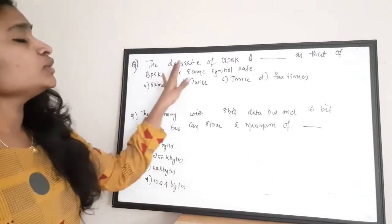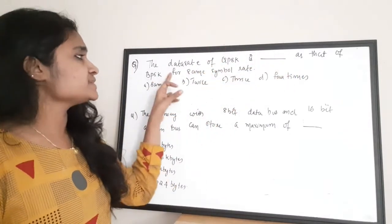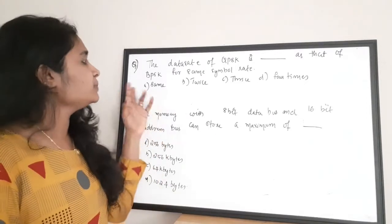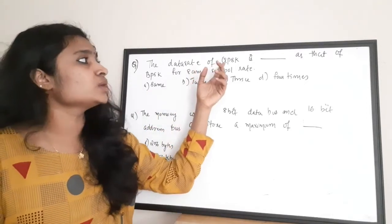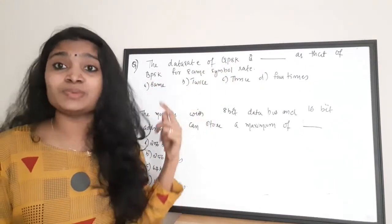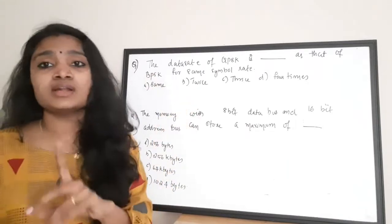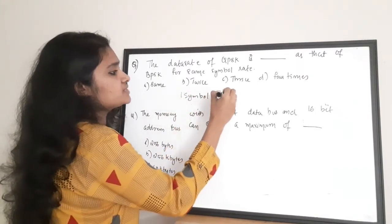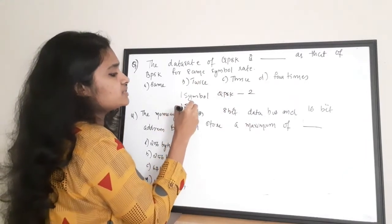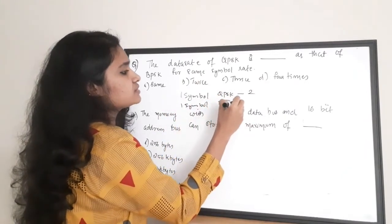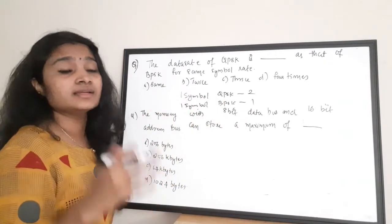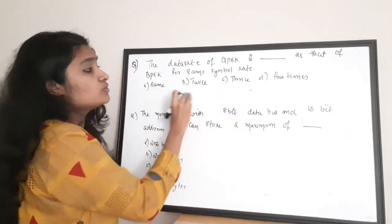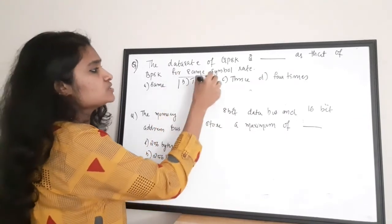Next question: the data rate of QPSK is dash as that of BPSK for the same symbol rate. QPSK is quadrature phase shift keying and BPSK is binary phase shift keying. QPSK sends 2 bits per symbol whereas BPSK sends 1 bit per symbol. So from this, the answer is clear — the QPSK has a data rate of 2 times that of BPSK. The correct answer is option B, which is twice.